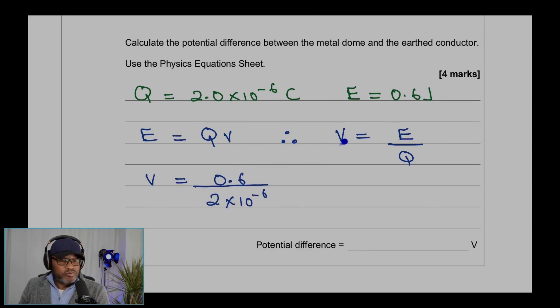We can substitute the values: V equals 0.6 divided by 2 times 10 to the power minus 6. That gives 300,000 volts. You can write 300 kilovolts, but the answer is requested in volts, so we write 300,000 volts.